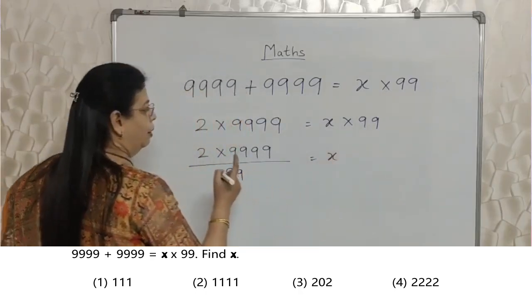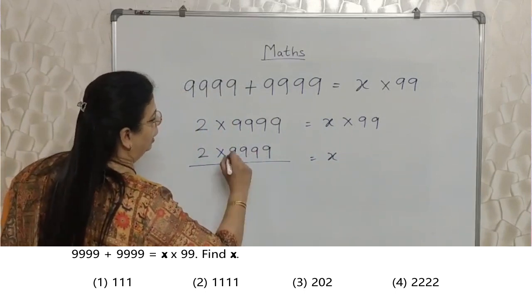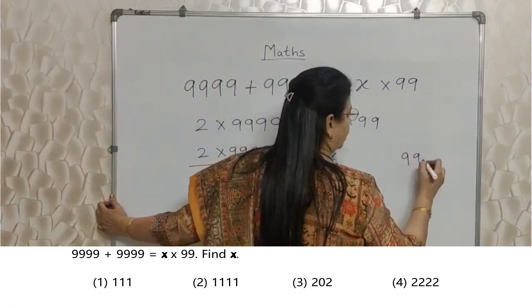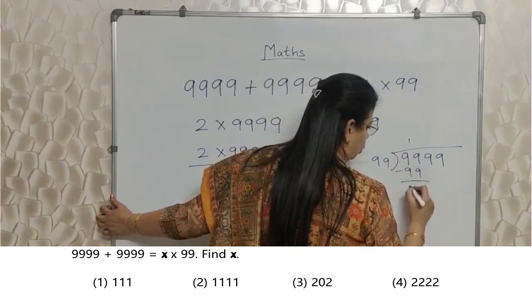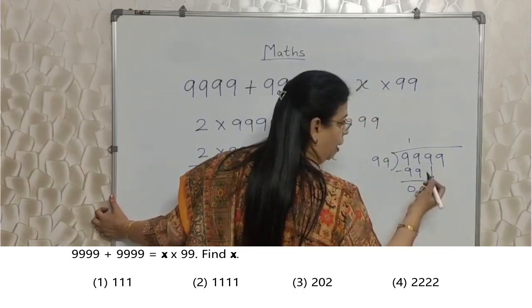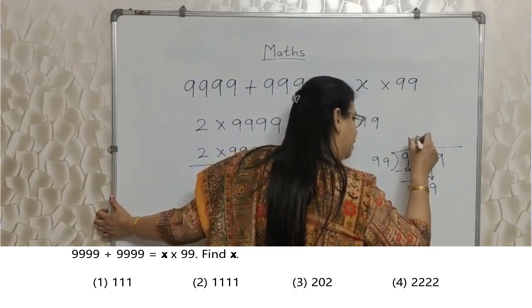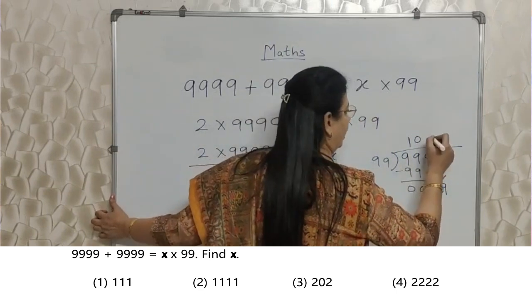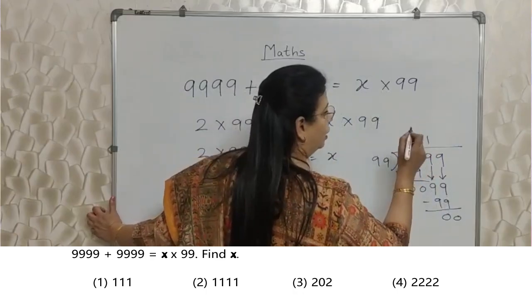Here again, probability of making mistake is more. 9999 ko 99 se divide kar de toh kya hoga? 99 was a 99. 11 likh te hai? Wrong. Aram se karo idar. 1s are 99, so 00. Now here only one digit will come down, 9. 9 is smaller than 99, so 0 de do idar. Then after writing this 0, this 9 will be brought down. Then 99, 1s are 99, 00.